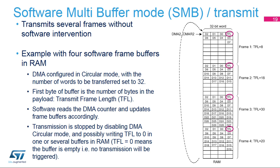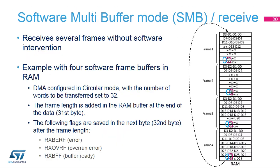The transmission is stopped by disabling DMA circular mode. In case you need to stop transmission before the DMA end of count, you must set the TFL field to 0. This way, the SWPMI will no longer issue any DMA requests. In SMB mode, several frames can be received without software intervention. The DMA must be configured in circular mode with the number of words set to 32. The frame length is available at the end of each software buffer in the 31st byte. The status of the frame stored in each buffer is available in the 32nd byte, which contains the error, overrun, and buffer-ready flags. Software can check the buffer-ready flag, read the buffer, and clear the 32nd byte.